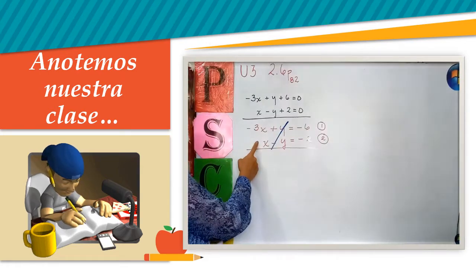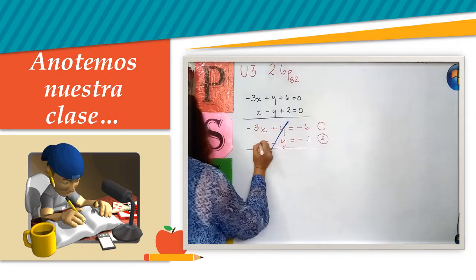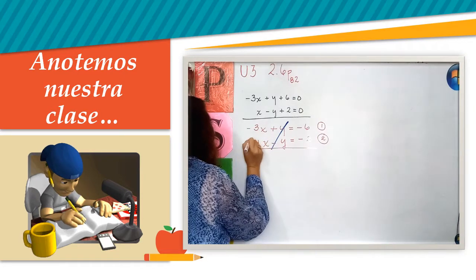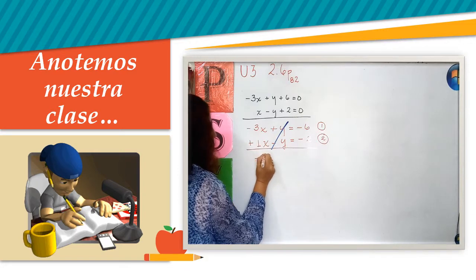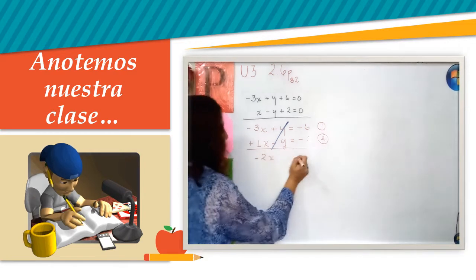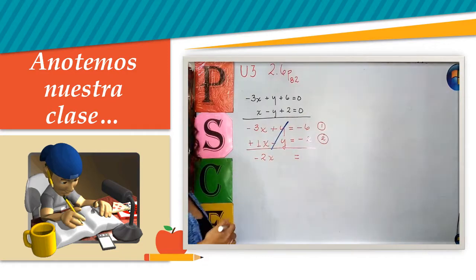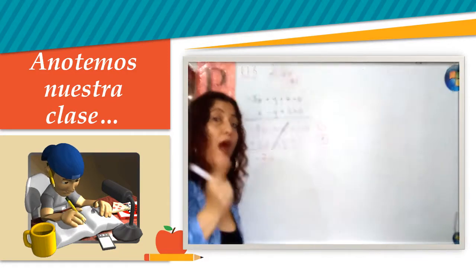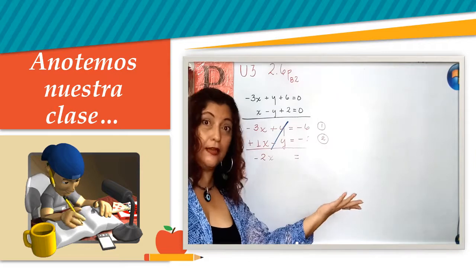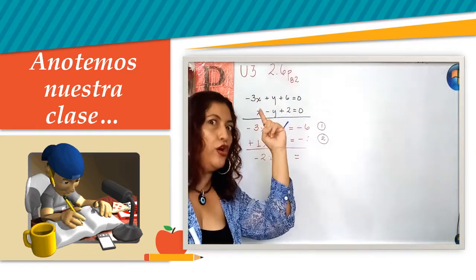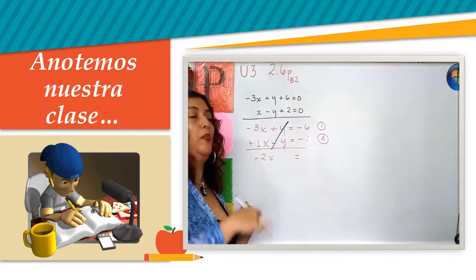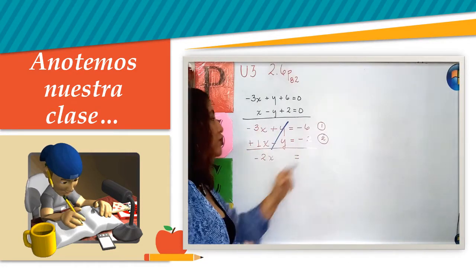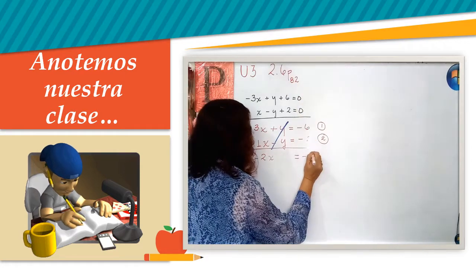Aquí hay un valor de 1 que no se escribe, pero sabemos que está ahí y que es positivo. A 3 le quito 1, voy a obtener menos 2 en x. Pongo mi igual, y recuerdo: signos iguales se suman, distintos se restan, y se conserva el signo del mayor. Por tanto, voy a tener menos 6 sumado a menos 2, que me da menos 8.